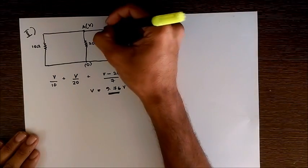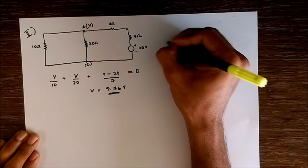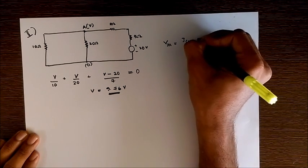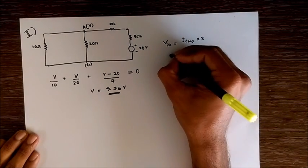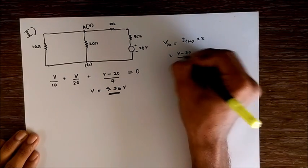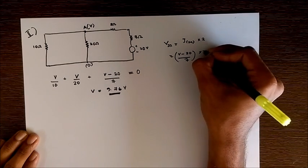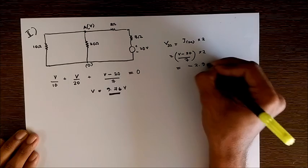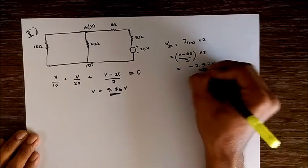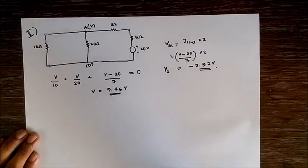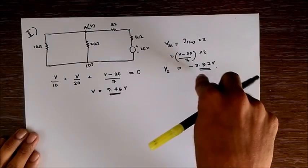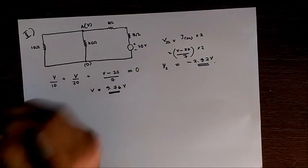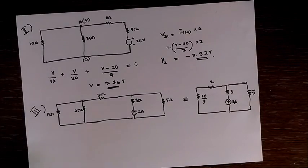So now we have to find out the voltage drop across 2 ohm resistor, which is V2. It is given by V minus 20 by 7 into 2, which is equal to minus 2.92 volts. This is V2 for the second source, the voltage drop across 2 ohm is minus 2.92.